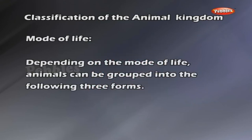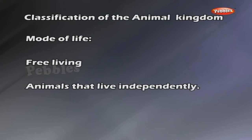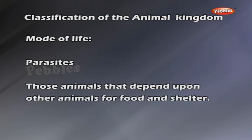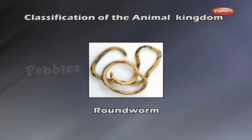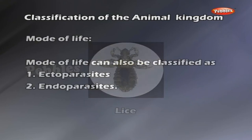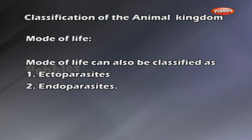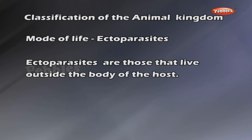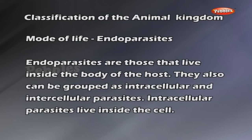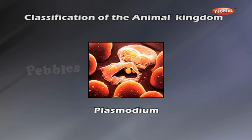Mode of life. Depending on the mode of life, animals can be grouped into three forms: free-living animals that live independently; parasites — those animals that depend upon other animals for food and shelter, examples: tapeworm, roundworm, lice. Life can also be classified as ectoparasites and endoparasites. Ectoparasites are those that live outside the body of the host. Endoparasites are those that live inside the body of the host. They can also be grouped as intracellular and intercellular parasites.